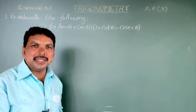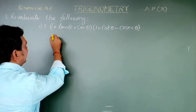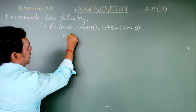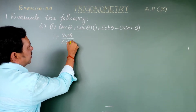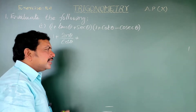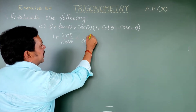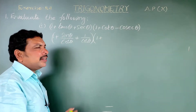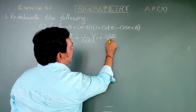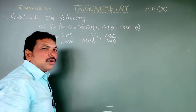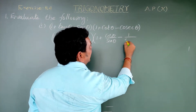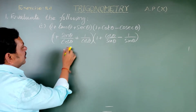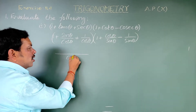Let us find. This is one plus tan theta — how can you write that simply? Yes, sin theta by cos theta, plus secant theta, which is one by cos theta. Into one plus cot theta, which is cos theta by sin theta, minus cosecant theta, which is one by sin theta.